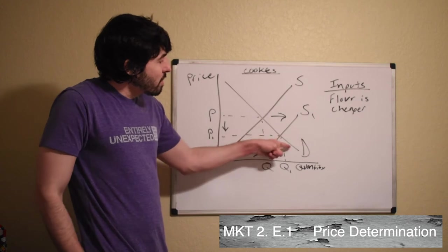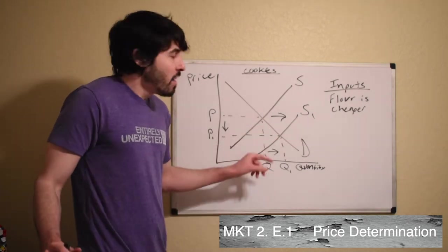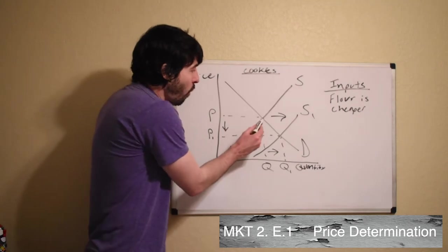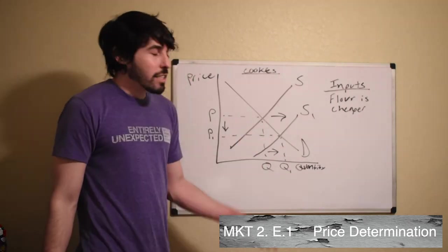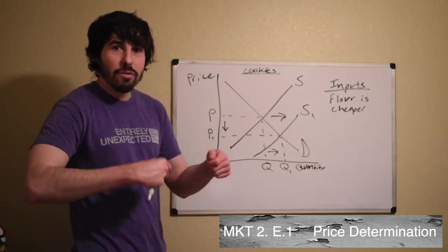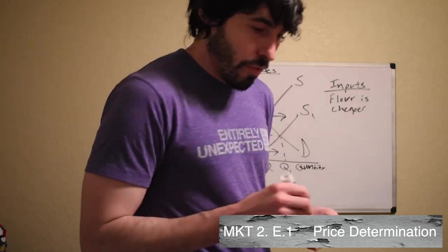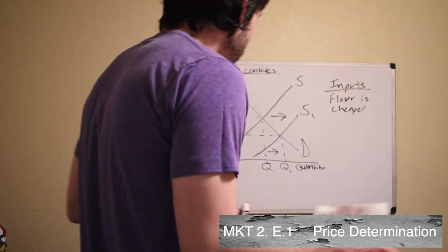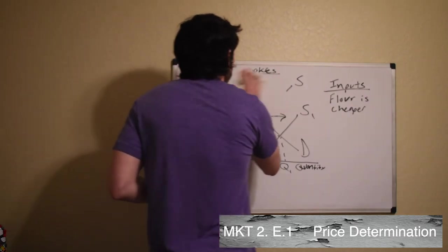Now remember, don't think about this as the demand shift, demand increasing, because demand did not increase. The curve has not shifted. The quantity demanded has increased. Now we want more cookies because they're cheaper. So the quantity demanded, the amount that we buy are going to increase because they're now cheaper. All right, let's do a couple more.